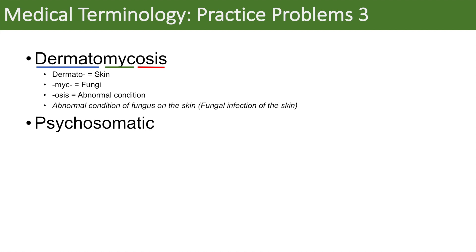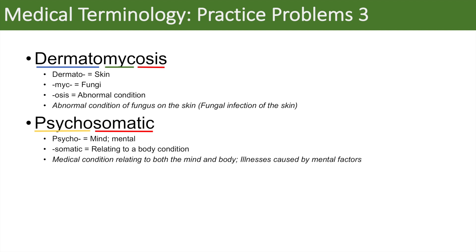The next word we're going to look at is psychosomatic. Psycho means mind or mental. Somatic — soma means body, and the suffix -ic means relating to or pertaining to. So somatic means relating to the body. When we put it together, psychosomatic means a medical condition relating to both the mind and body. We use the word psychosomatic when looking at body illnesses typically caused by mental factors such as stress.